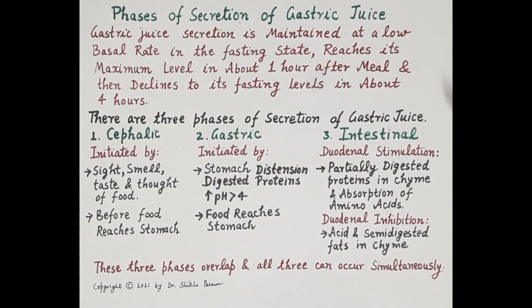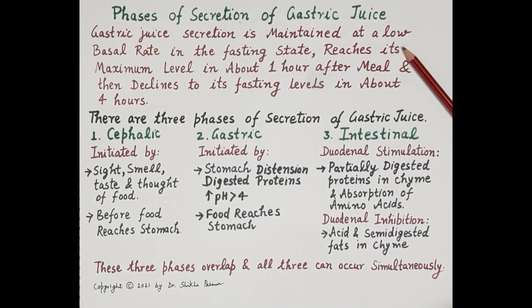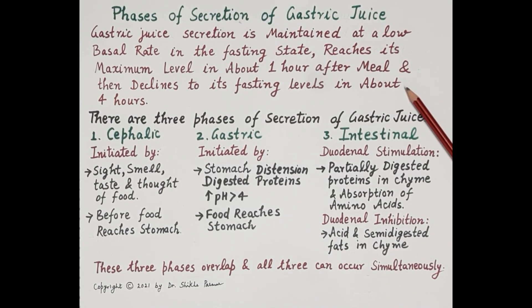Today we are going to study phases of secretion of gastric juice. Gastric juice secretion is maintained at a low basal rate in the fasting state. However, gastric juice secretion reaches its maximum level in about one hour after the meal, and then again it declines to its fasting level in about four hours.